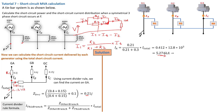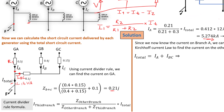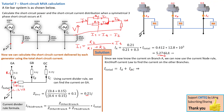Now that we know IA is 5.274 kiloamps, it's very simple. We can subtract IA from the total current to get IBC. Since I total = IA + IBC, we get IBC = I total − IA = 12.8 − 5.274 = 7.52 kiloamps. That is your IBC — the current at that node, which is indeed bigger as we expected.